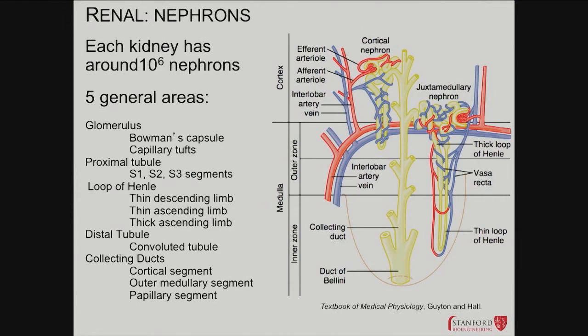Then there's a process of selective reabsorption — taking back what you want to keep from what was filtered. Take back the ions you need, take back the water you need. You dump almost everything out and then collect back what you need. That process happens through a convoluted tubule and a long loop called the loop of Henle. As you go deeper into the kidney, into the inner zone of the medulla, something important happens.